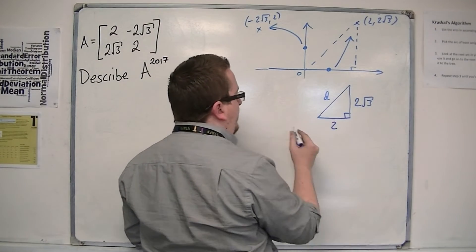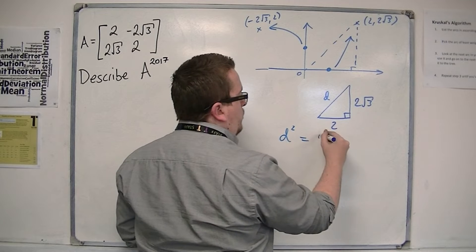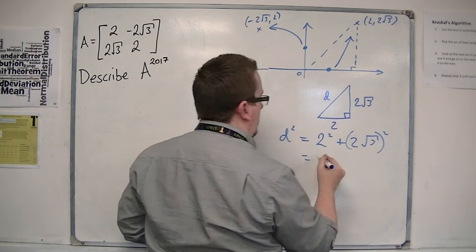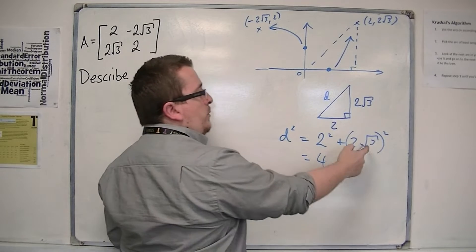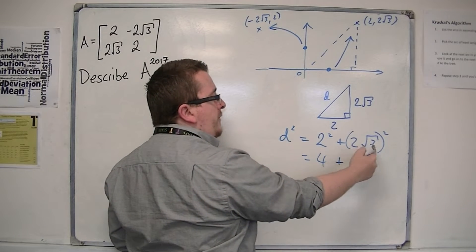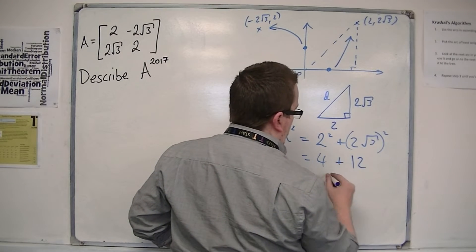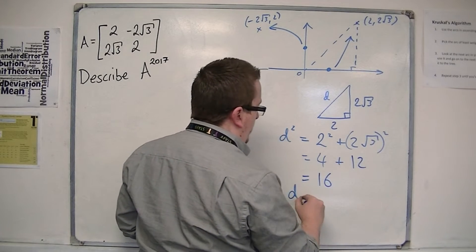So this distance d, d squared, is equal to 2 squared plus 2 root 3 squared. So that's 4 plus, well, 2 root 3 squared is 2 squared times 3, so that's 12. So 4 plus 12 is 16, so d must be 4.